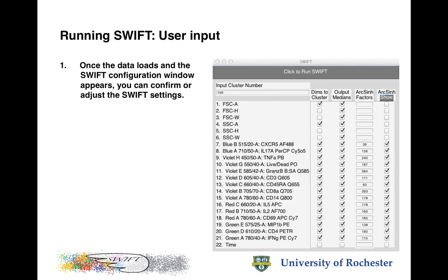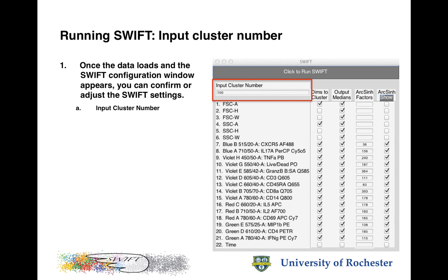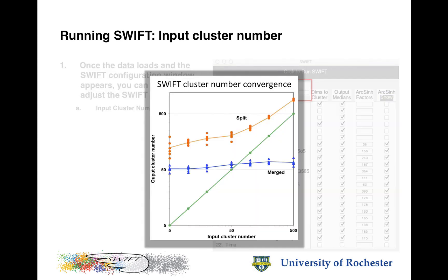Then the user input window appears, which allows you to customize the parameters that Swift uses to analyze the data. First of all, the input cluster number — this is the number of Gaussian distributions that will be used by Swift in the first step. As explained earlier, this number will be substantially modified by the splitting and merging steps, but it is useful if this number is a reasonable approximation of the expected final number. In this case, a number of 100 is suggested. If you think there will be more than 500 clusters in the final analysis, you might want to start with 200 or 300. This is not a critical number because of Swift's ability to self-normalize, as shown in this diagram.